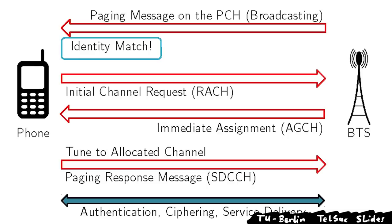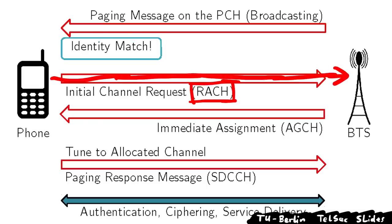The full rate channel provides a higher bit rate and better quality of speech, while the half rate channel allows two subscribers to use a single time slot at the same time, increasing network capacity. The base station broadcasts a paging request asking if a particular phone is in the area. Our phones are constantly listening for these paging requests, and when the phone recognizes it's being paged, it responds with a channel request through the RACH — the Random Access Channel. If two phones request simultaneously, they collide and don't get their channel.